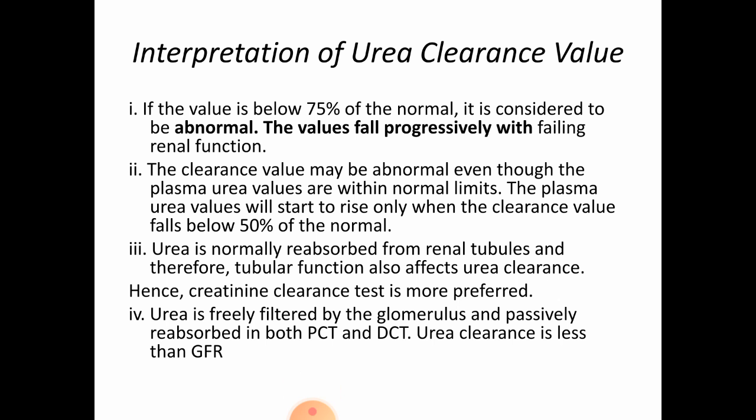Regarding its significance, you need to interpret the urea clearance value. If the value is below 75 percent of the normal, it is considered to be abnormal and indicates an abnormality of the kidneys.